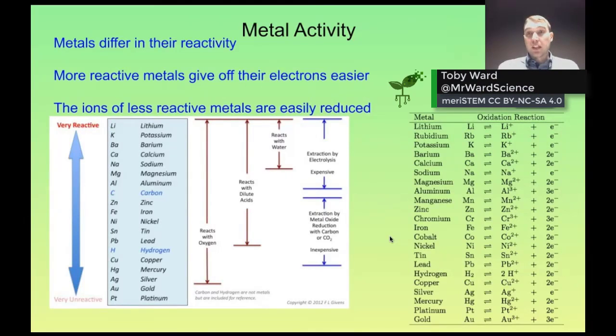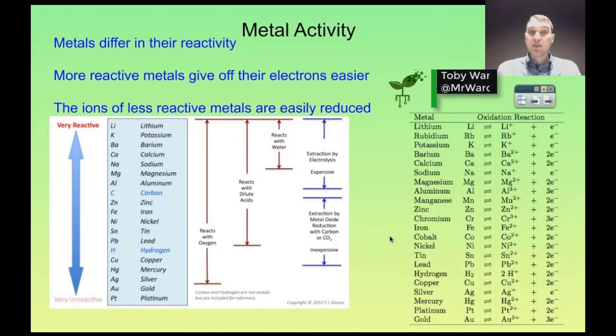Metals differ in their activity. A very reactive metal will lose its electrons very easily. By definition, a metal loses electrons, so a metal that loses electrons very easily is very reactive.